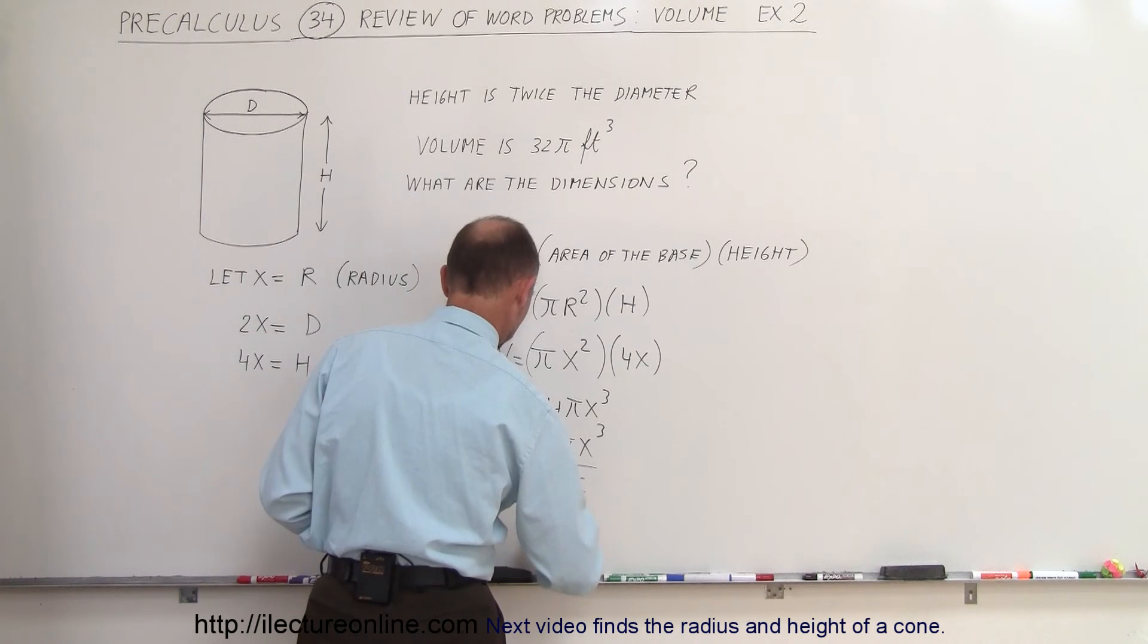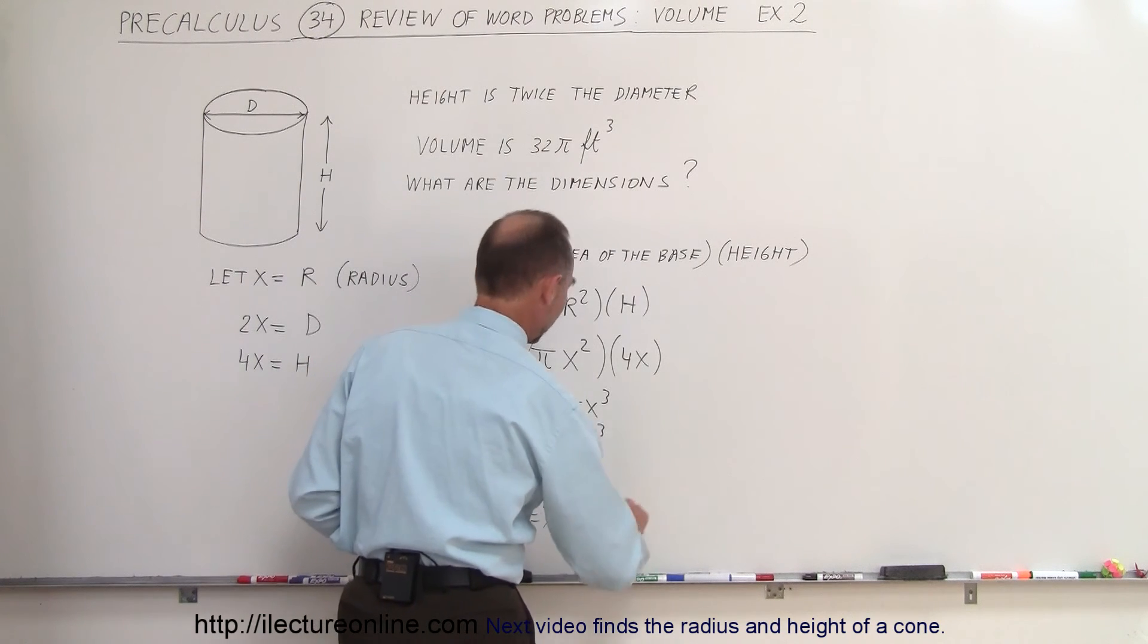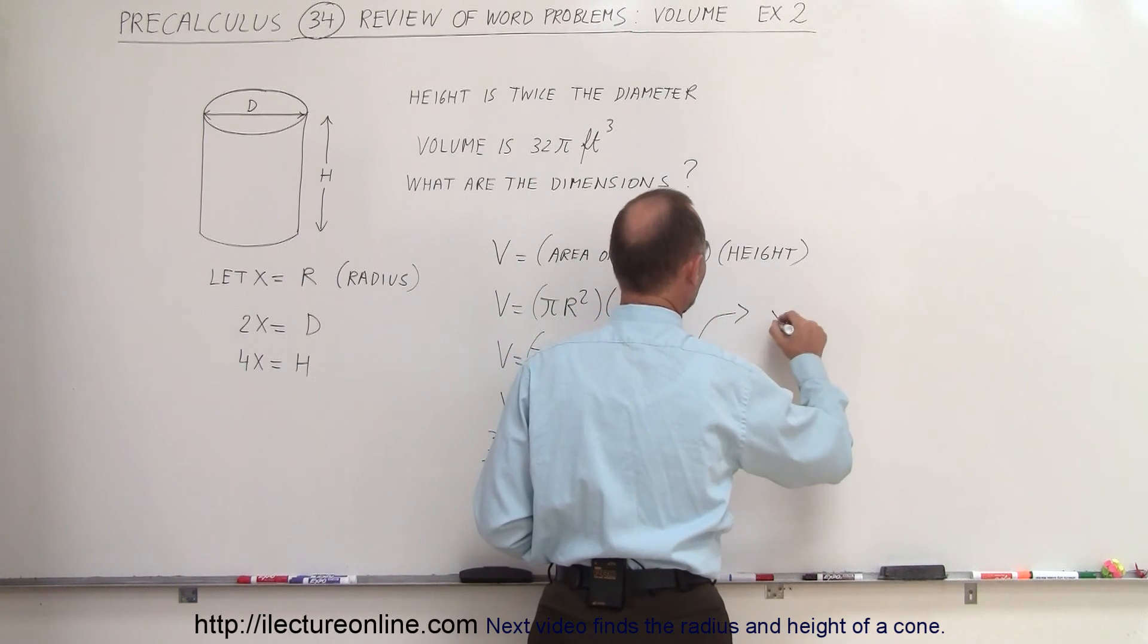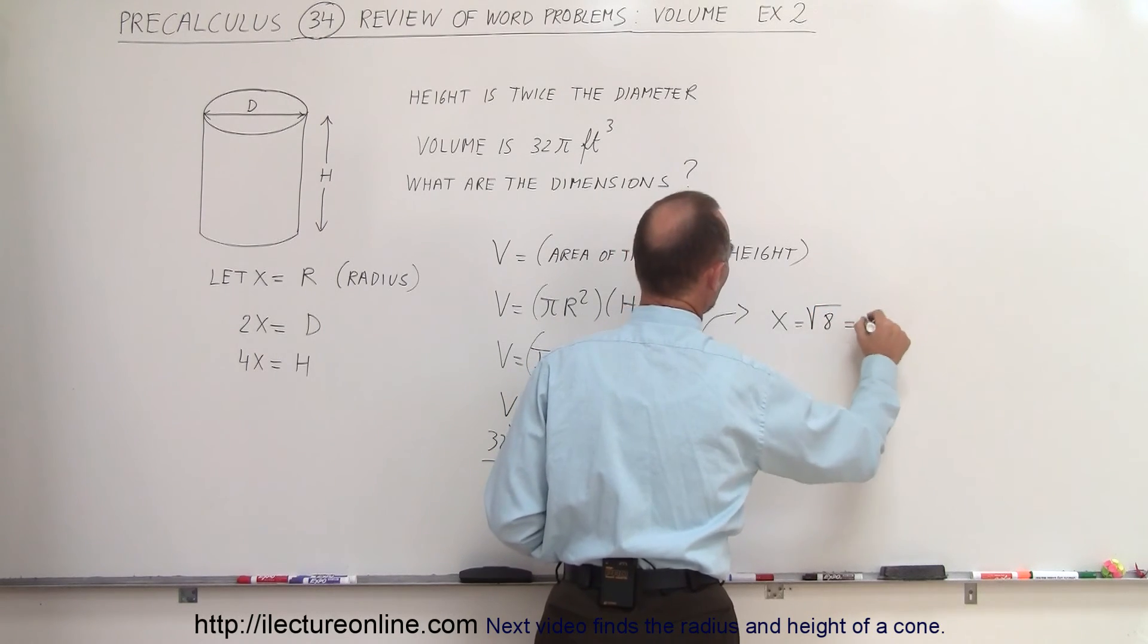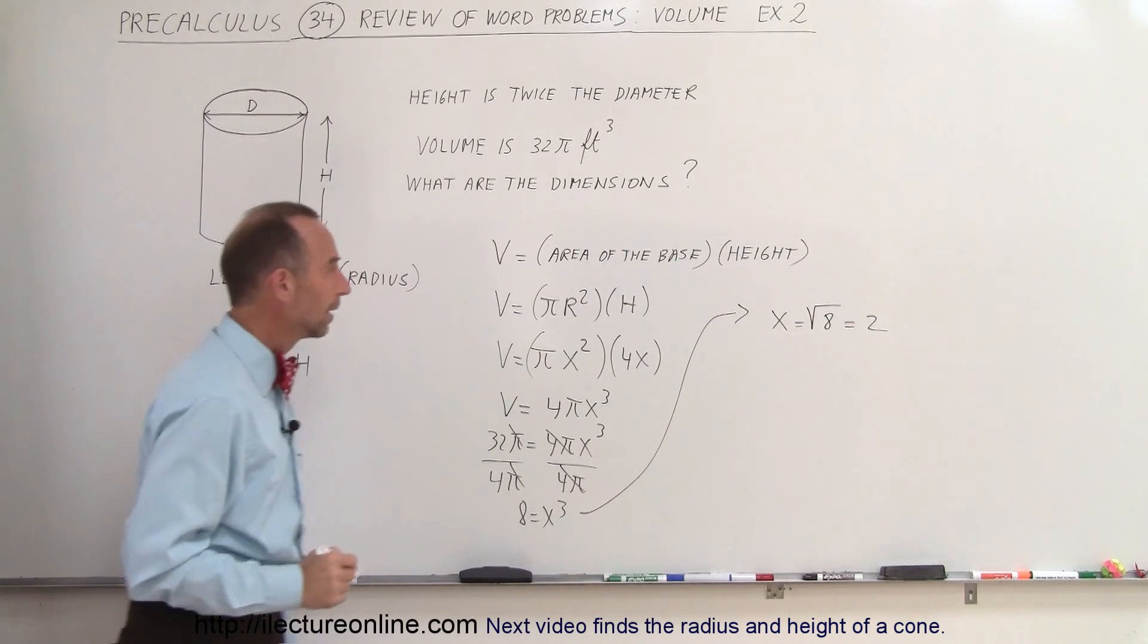So we have 8 is equal to x³, and then of course we take the cube root of both sides. Therefore x is equal to the cube root of 8, which is equal to 2.